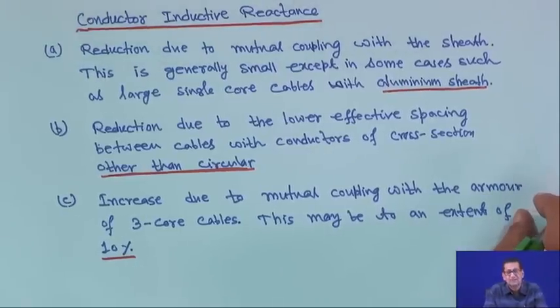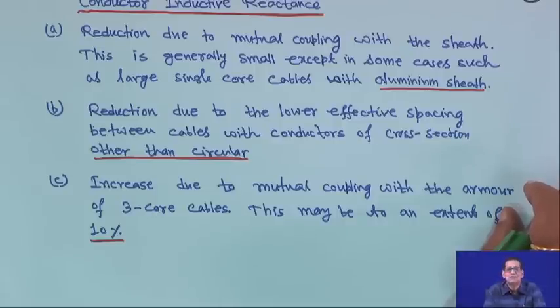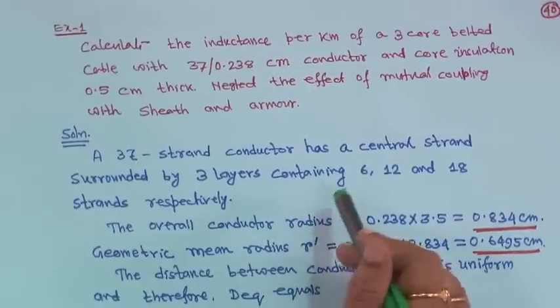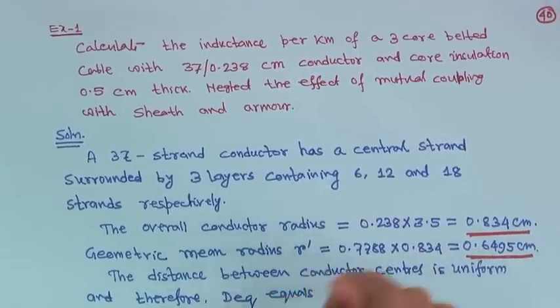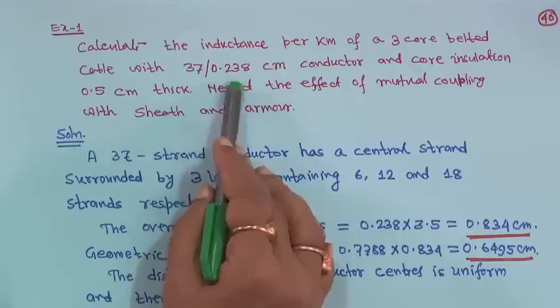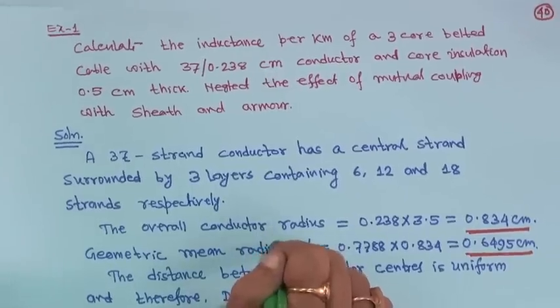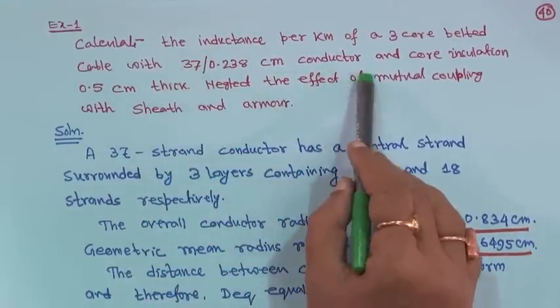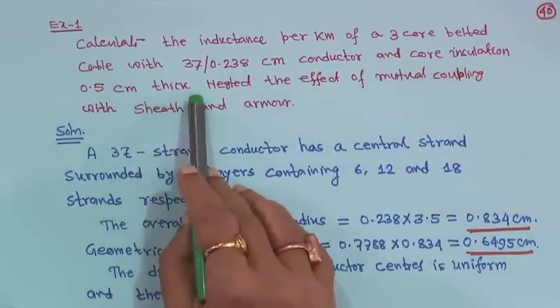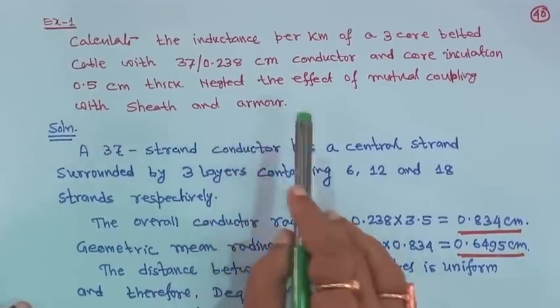Up to this point most of the theory has been covered — the suggestion is to read a book and any doubts will be answered. Now, one example: calculate the inductance per kilometer of a 3-core belted cable with a 37-strand conductor of 0.238 cm, with core insulation 0.5 cm thick, neglecting the effect of mutual coupling with sheath and armour. You should find it out yourself.